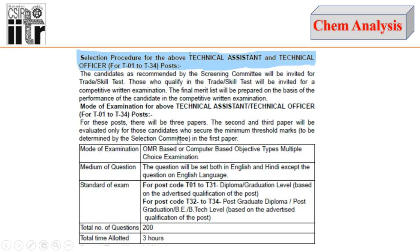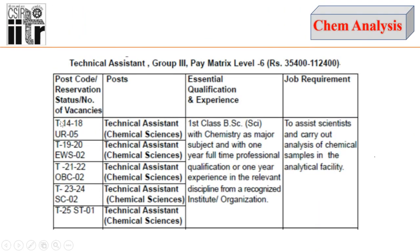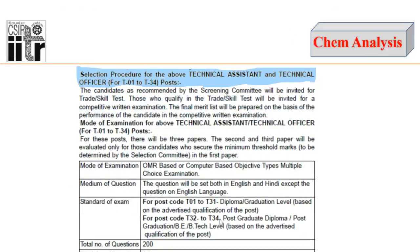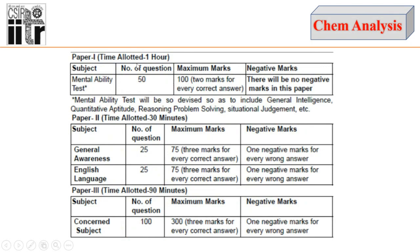In the examination there will be three papers, and the mode of examination will be OMR-based or computer-based with multiple choice type questions. The question set will be in both English and Hindi language, except English language subjects which will be only in English. The post code for chemical science candidates is T18 to T25, which is graduation-level based. The codes T32 to T34 are post-graduate level. The total number of questions will be 200 and total time is three hours.